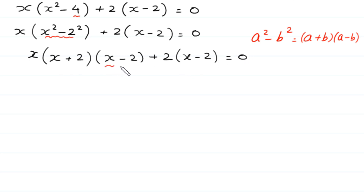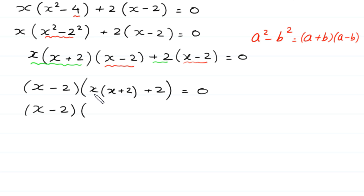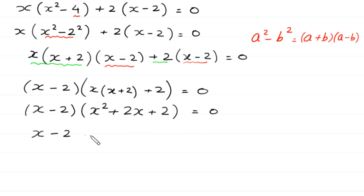Now, as you can see, (x minus 2) is a common factor. So we factor out (x minus 2), leaving in bracket: x times (x plus 2) plus 2, equal to 0. Expanding: x squared plus 2x plus 2, so (x minus 2) times (x squared plus 2x plus 2) is equal to 0. From here, either x minus 2 equals 0, or x squared plus 2x plus 2 equals 0.